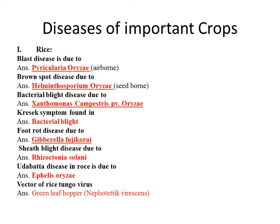Rice blast pathogen Pyricularia oryzae is airborne. Brown spot of rice, caused by Helminthosporium oryzae, is seed-borne. Bacterial blight is caused by Xanthomonas campestris. The pathogen variety shows a crescent symptom in rice affected by bacterial blight.